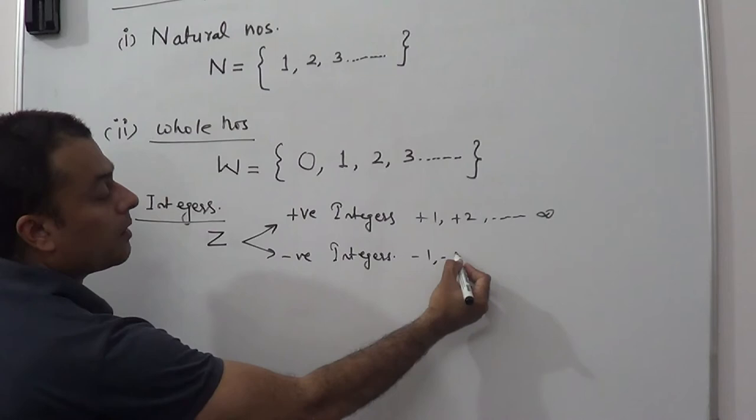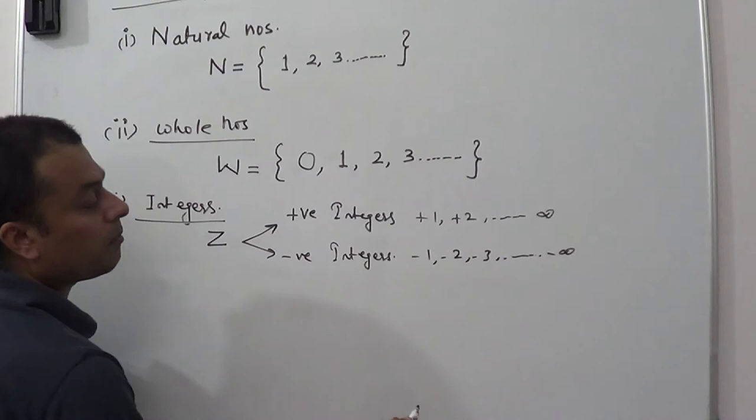And the category of negative integers will have minus 1, minus 2, minus 3 up to minus infinity.